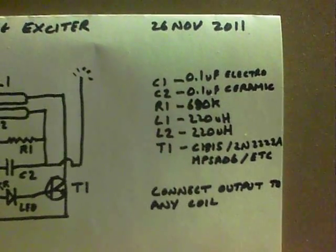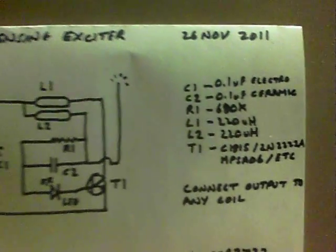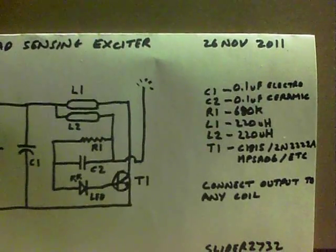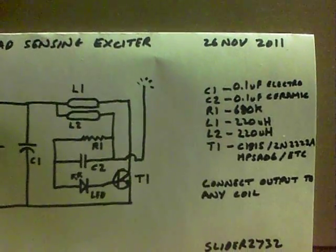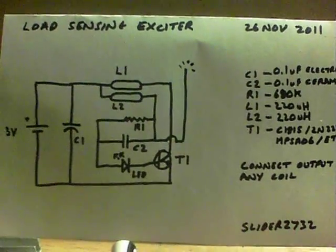And the transistor is a C1815. I've got a permanent resistor there of 680K, and I've changed the capacitor, the electrolytic that goes across the supply to a 0.1UF.